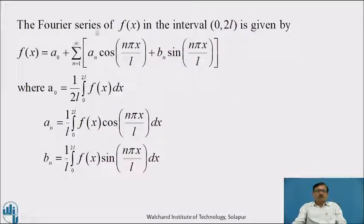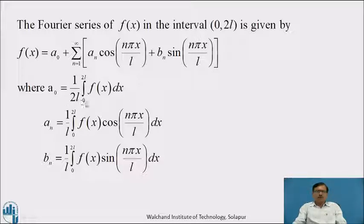The Fourier series of f(x) in the interval 0 to 2L is given by Euler's formulae: f(x) = a₀ + summation of n=1 to infinity of aₙ cos(nπx/L) + bₙ sin(nπx/L). Here a₀ = (1/2L) ∫₀²ᴸ f(x) dx, aₙ = (1/L) ∫₀²ᴸ f(x) cos(nπx/L) dx, and bₙ = (1/L) ∫₀²ᴸ f(x) sin(nπx/L) dx.